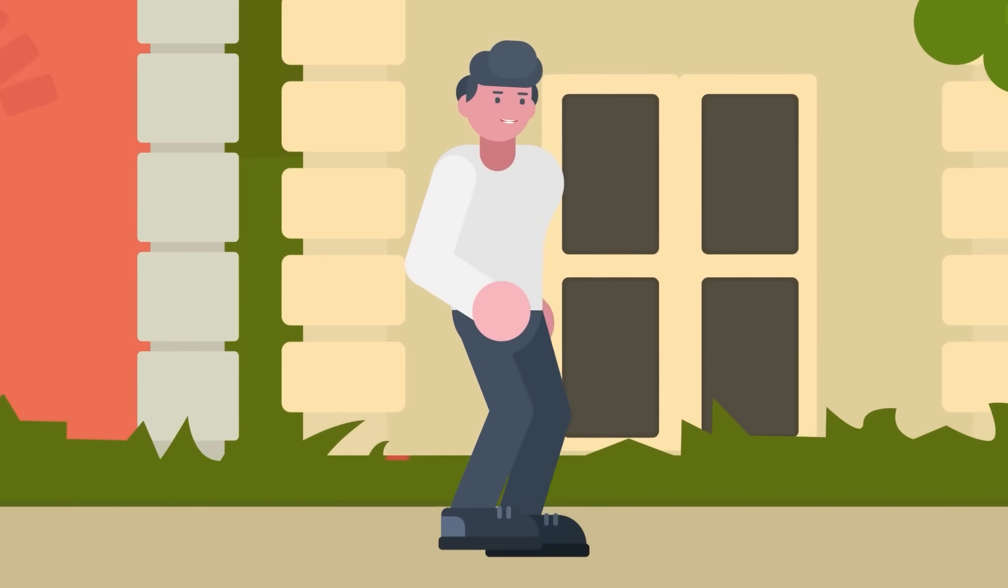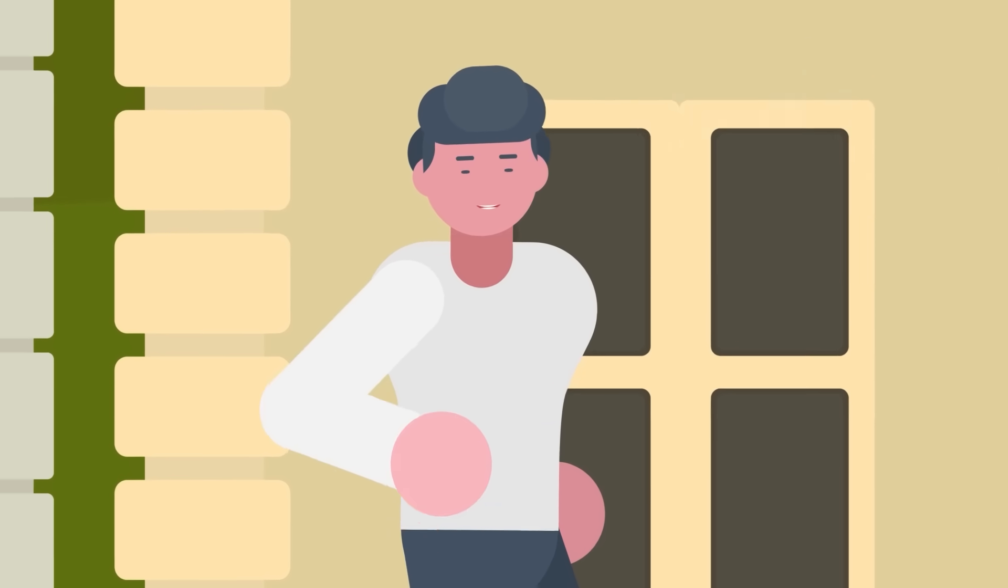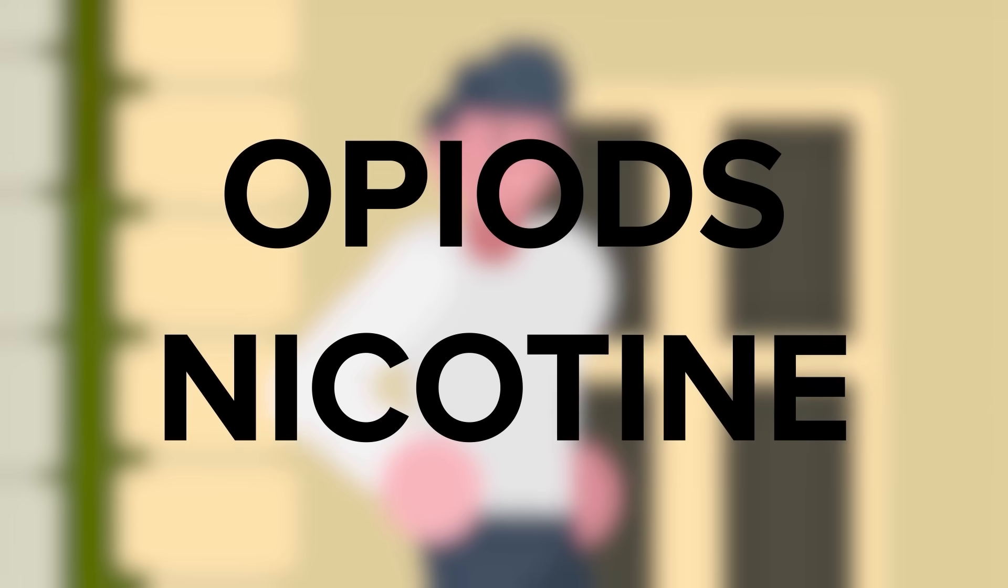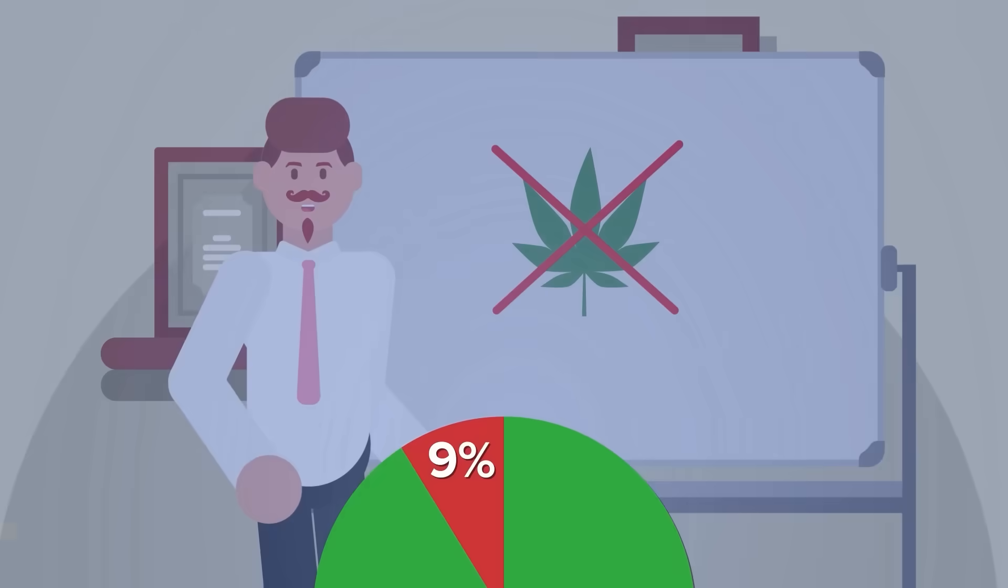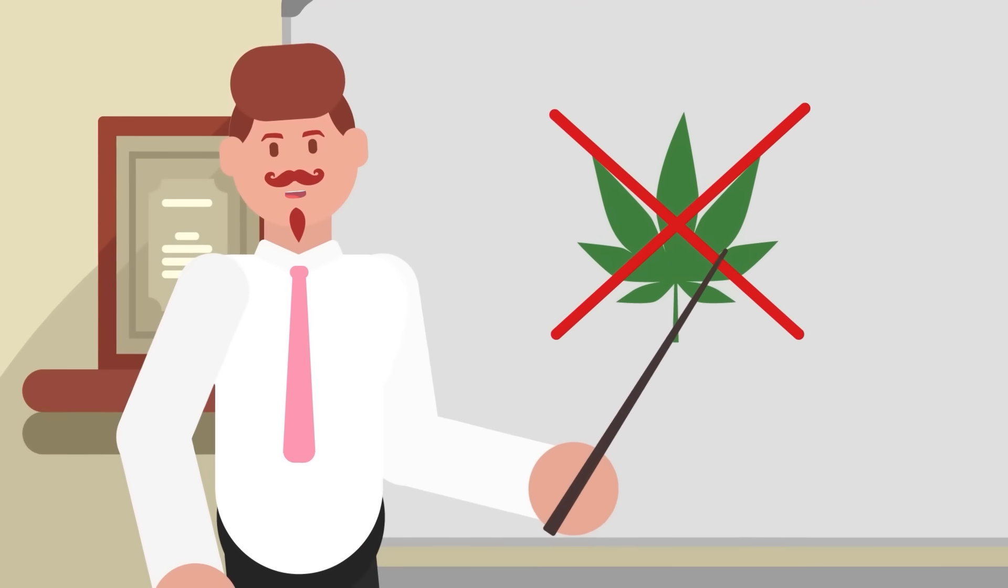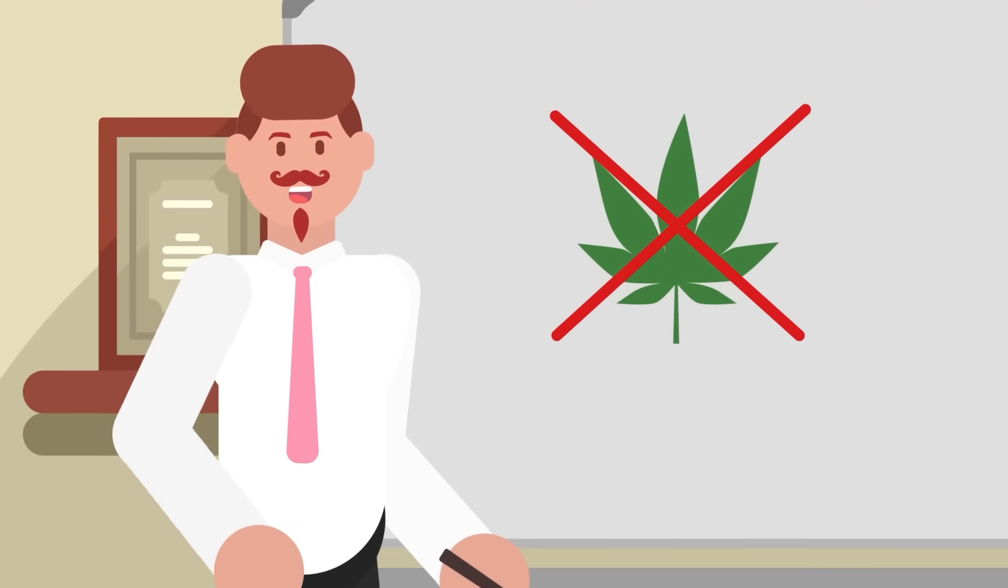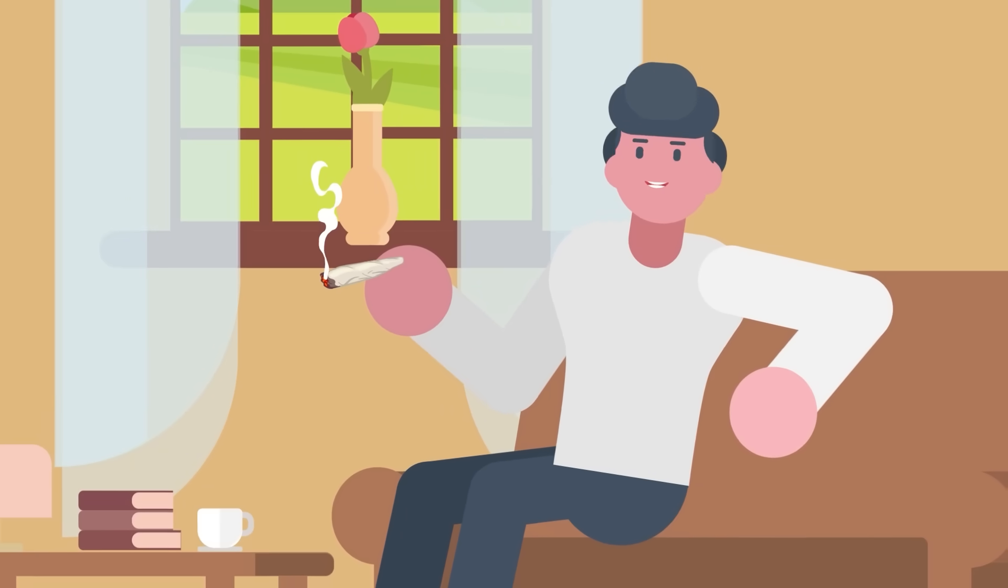Next, myth number two. You can't get addicted to marijuana. While the addictive potential of marijuana may be less compared to substances like opioids or nicotine, addiction is definitely a risk factor. Studies show that roughly 9% of users become dependent, and this number jumps with those who start using during their adolescent years. Addiction means experiencing withdrawal symptoms when you stop, continued use despite negative consequences, and losing control over how much or how often you consume.